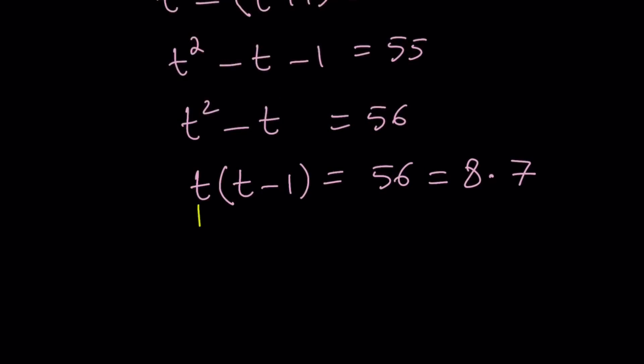Now, this tells you that t = 8 is a solution, doesn't it? But there should be two solutions. t = 8. Here's the trick. 8 times 7 is equivalent to -7 times -8. Since our smaller number is -8, in this case, the larger one will be -7. So, that also tells you that t = -7 is another solution.